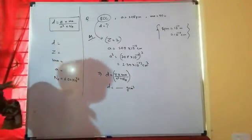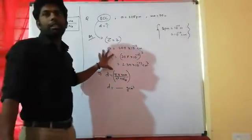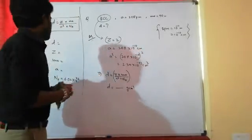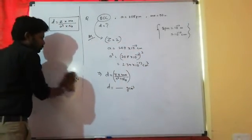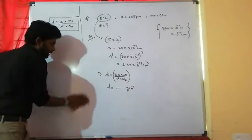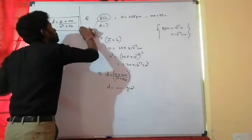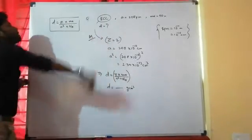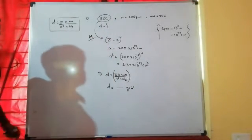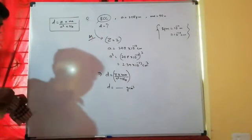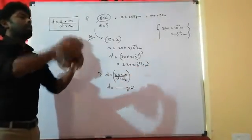Normally density questions are worth 2 marks. But in the NCERT book there is Example 1.3, which is a 3-mark question. So write down Example 1.3 from the NCERT book.